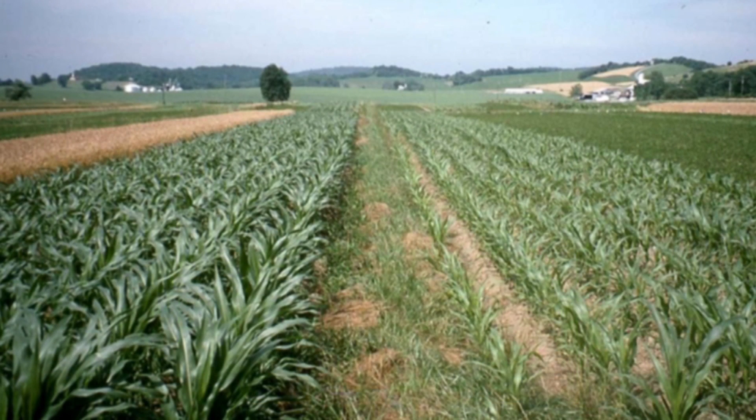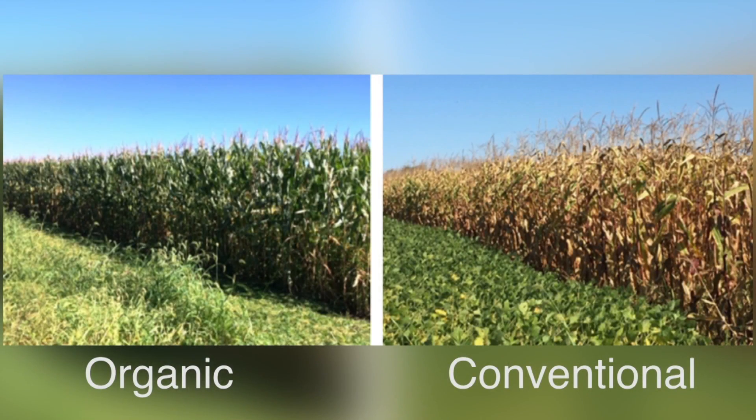The nutrient density analysis research at Rodale Institute is currently examining the nutrient density of oat grain. The oat grain comes from our farming systems trial, more commonly referred to as FST. FST is one of the longest running farming trials in the US that compares organic and conventionally grown grain, which began in 1981.